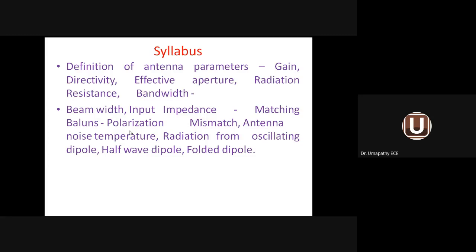We cannot assume that whatever polarization is transmitted from the transmitting antenna will be received by the receiving antenna. The receiving antenna polarization and the incoming electromagnetic wave polarization may differ — this is called polarization mismatch. When there is a mismatch, maximum signal will not be received.